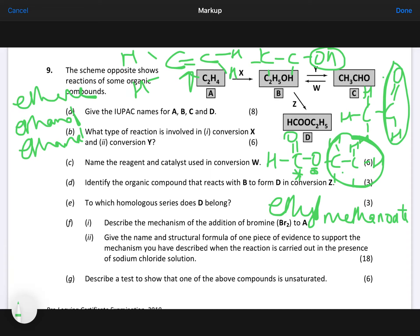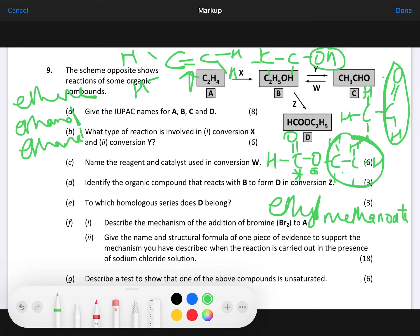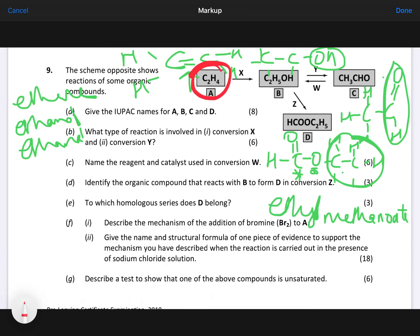Now, part B. Type of reaction is involved in conversion X. The minute you spot the alkene, you are thinking addition. So X is addition. And Y then, you're going from an alcohol to an aldehyde. So Y is oxidation.